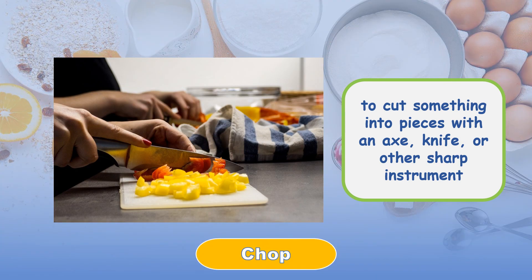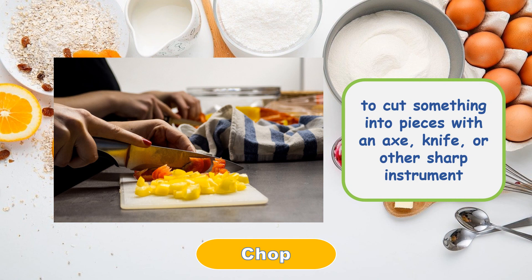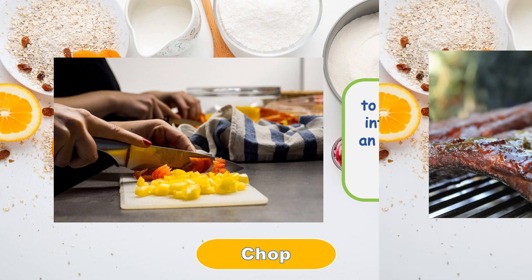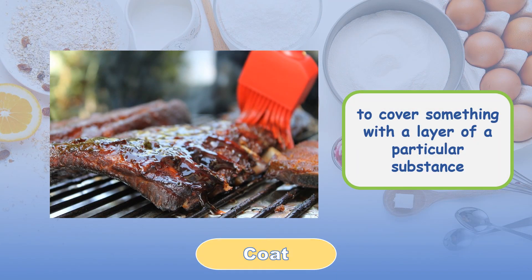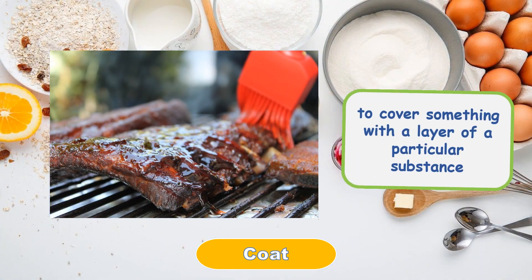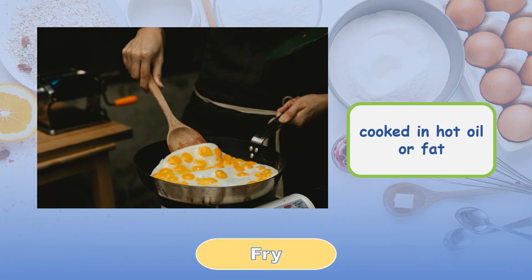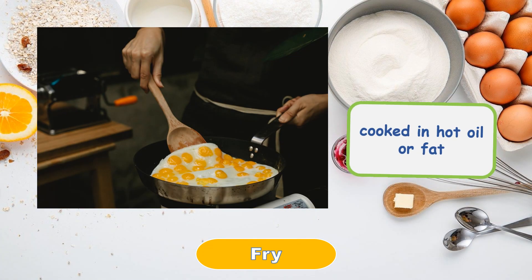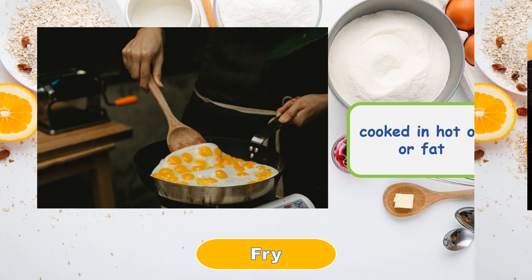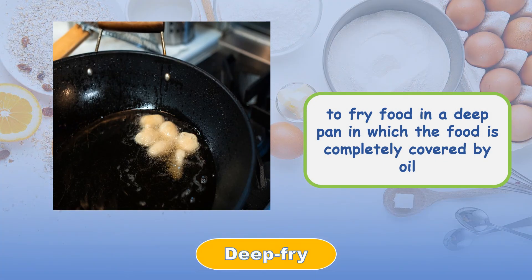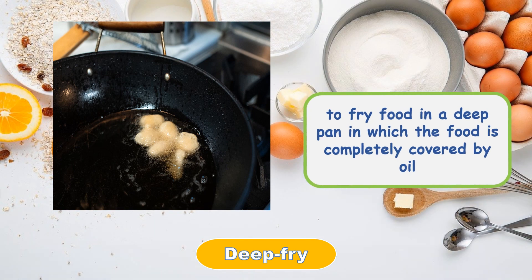Chop: to cut something into pieces with an axe, knife, or other sharp instrument. Coat: to cover something with a layer of a particular substance. Fry: cooked in hot oil or fat. Deep fry: to fry food in a deep pan in which the food is completely covered by oil.